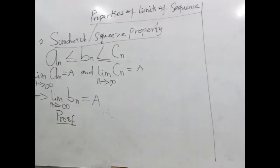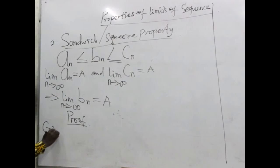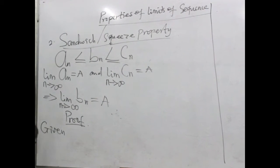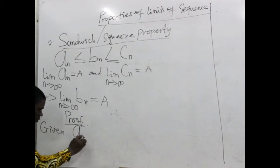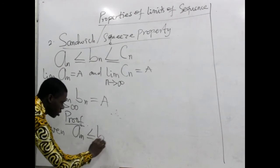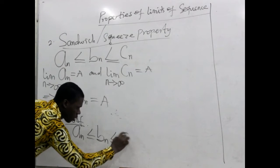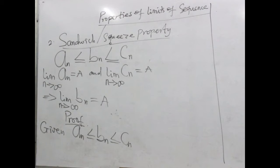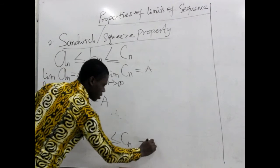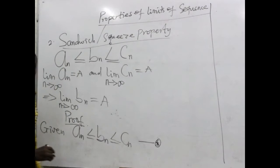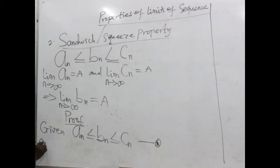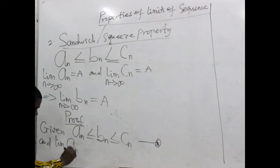Alright, to prove — let's state the given. So we are given this particular sequence in this nature, and we'll call this one star. We'll be referring to this, so let's say that's a star. If that is the case, and we know that the limit of this sequence as n approaches infinity equals a.